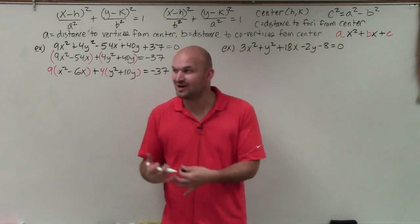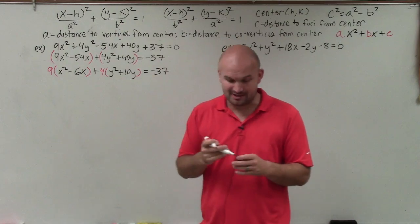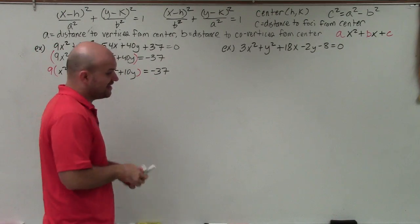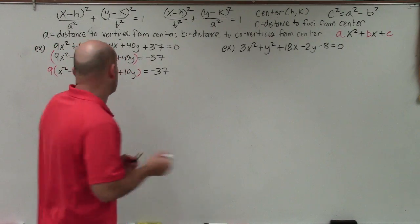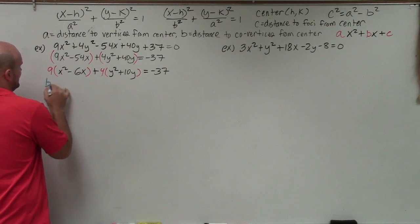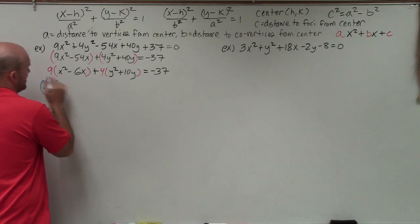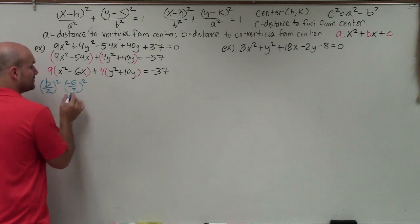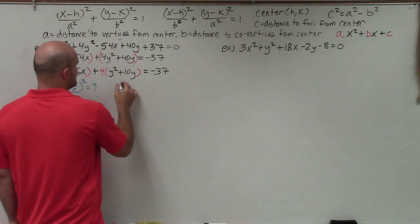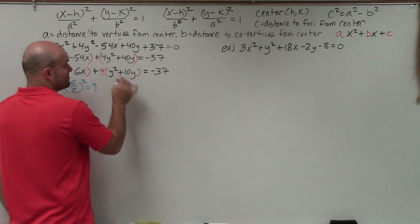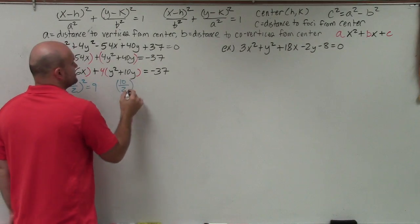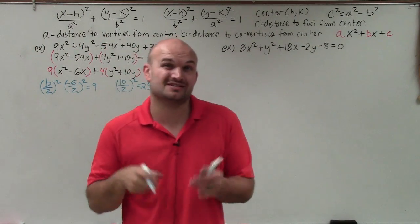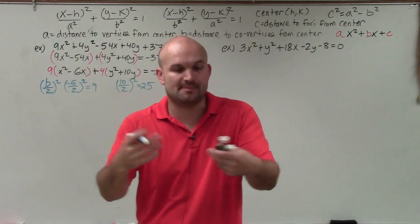Now that a equals 1, we can complete the square. The process is: take the value b, divide it by 2, and square it. For the x trinomial: negative 6 divided by 2 is negative 3, and negative 3 squared is 9. For the y trinomial: 10 divided by 2 is 5, and 5 squared is 25. I'm going to insert those values into each set of parentheses to create perfect square trinomials.